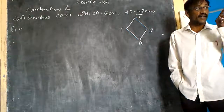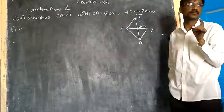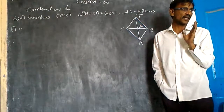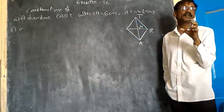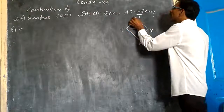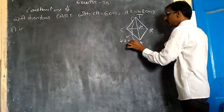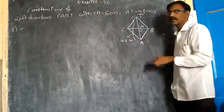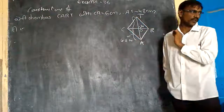The diagonal A-T is at the right hand side. Bisecting means they should be divided into two equal pieces, or two equal parts. A-T is given — from here to here, A-T is 4.8 cm. Suppose they intersect at O.